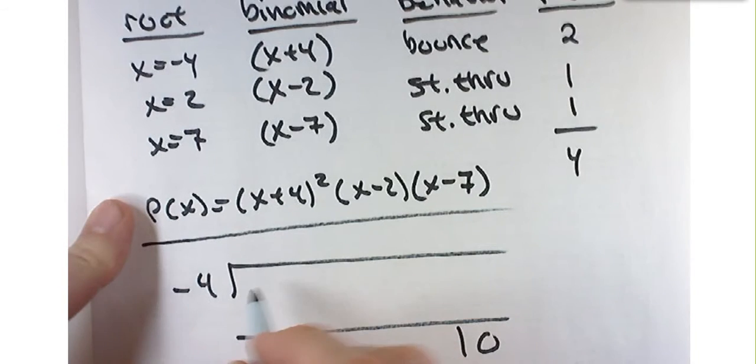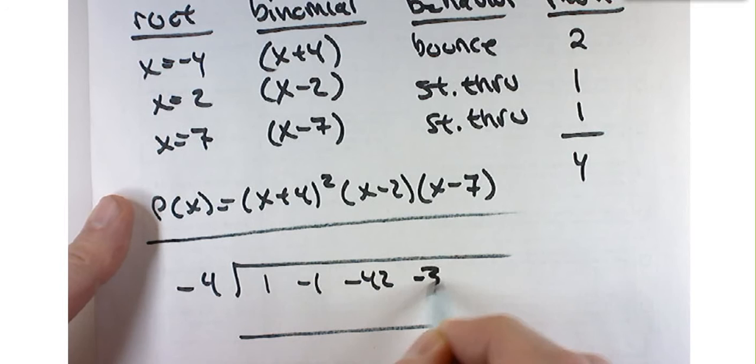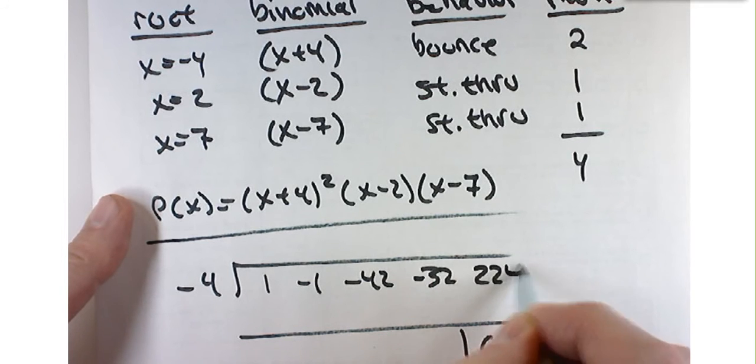So let's take kind of a quick look here. There'd be 1, negative 1, negative 42, negative 32, and 224.